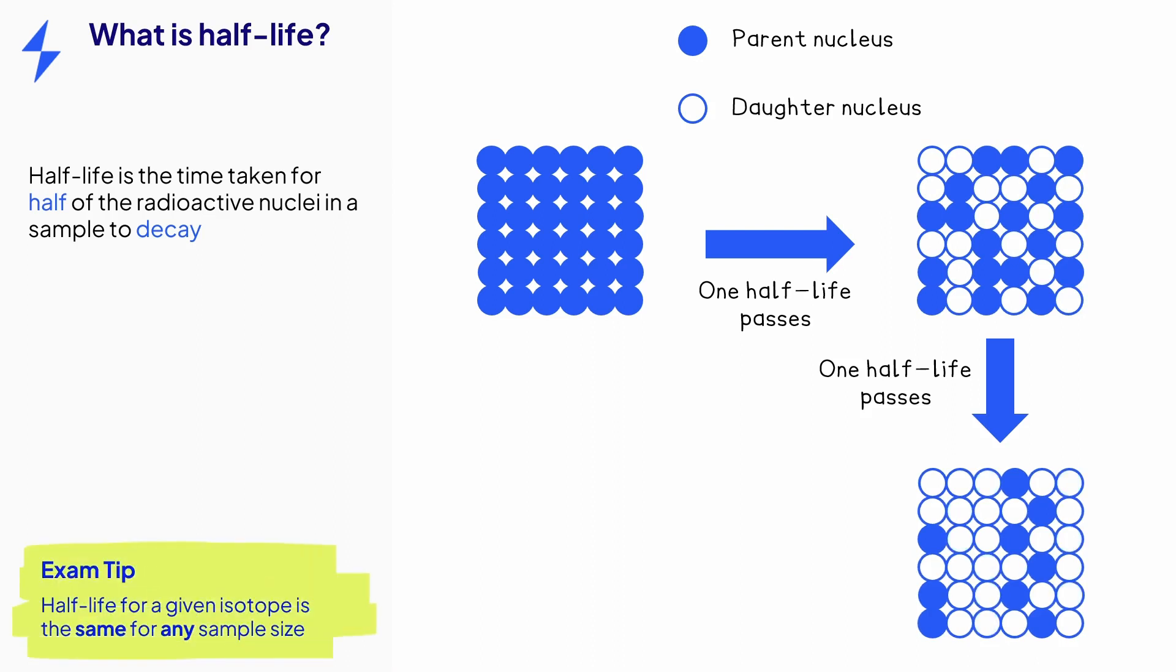The half-life of a particular radioactive isotope is independent of the sample size. This is caused by the random nature of radioactive decay.